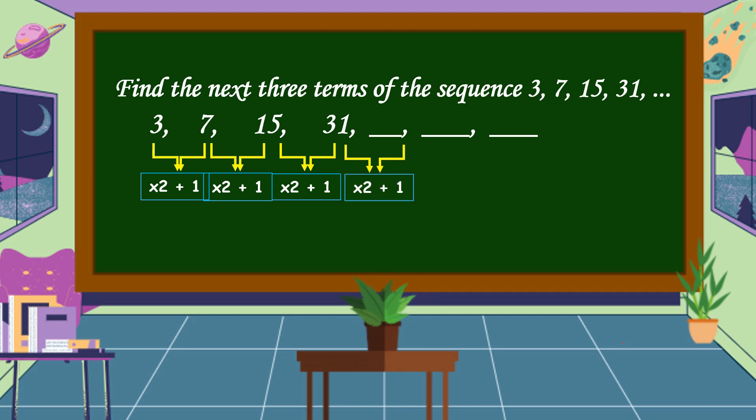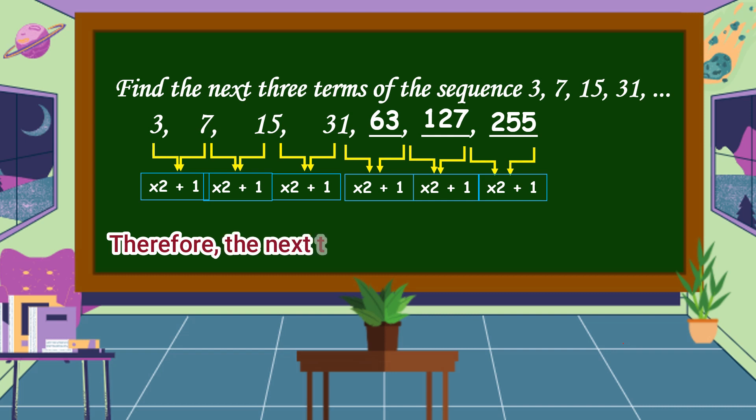31 times 2 equals 62, plus 1 equals 63. 63 times 2 equals 126, plus 1 equals 127. Lastly, 127 times 2 equals 254, plus 1 equals 255. Therefore, the next three terms are 63, 127, and 255. The pattern rule: multiply by 2 and add 1.